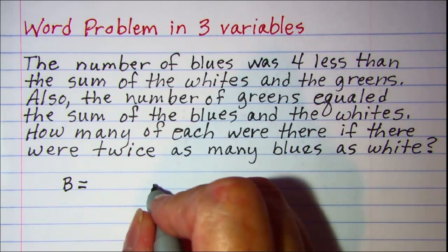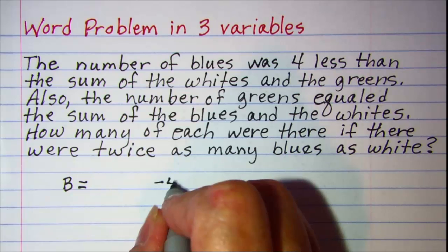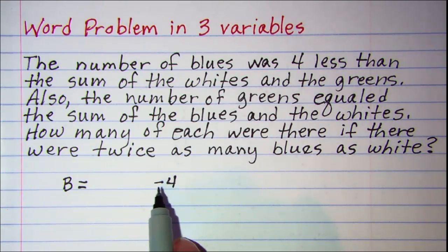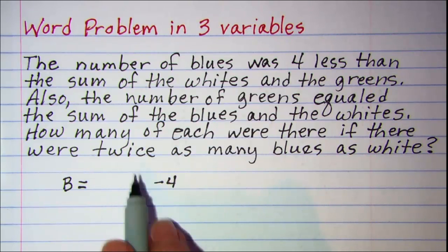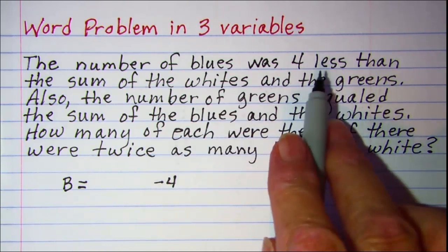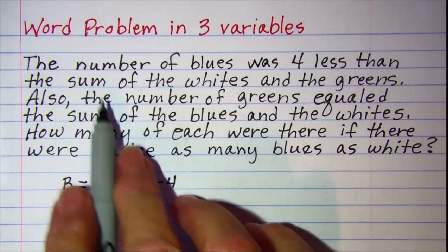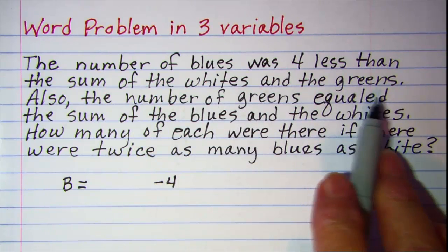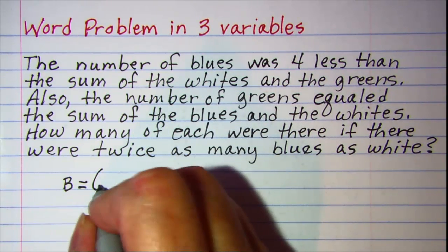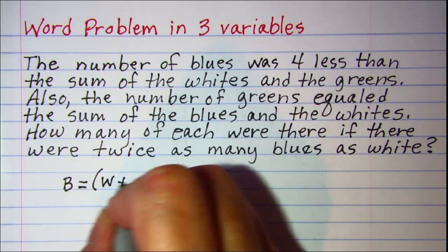So we're going to move the four over and put a minus in front of it. So this indicates four less than something. Four less than the sum of the whites and the greens.